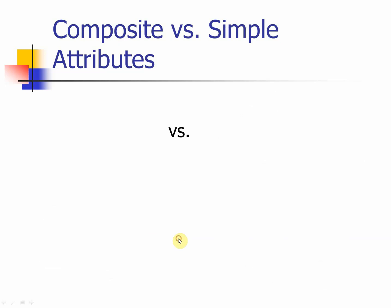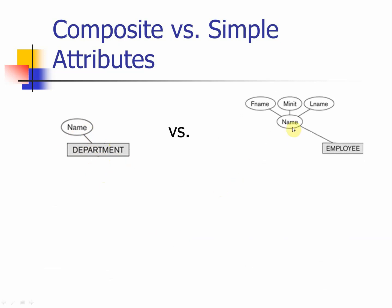Here is another example. For the department, there is a name for the department — we use an oval with a line connecting to the entity represented by a rectangular box. Versus for an employee, the name can be further divided into first name, middle name, and last name. Department doesn't need that, but for employee the name consists of three parts — this gives another example of a composite attribute.